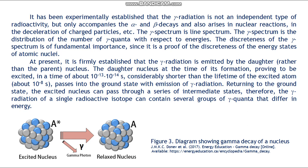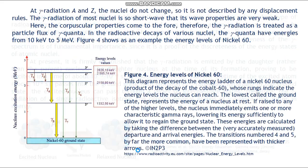The nucleus passes into the ground state with emission of gamma radiation. In returning to the ground state, the excited nucleus can pass through a series of intermediate states; therefore the gamma radiation of a single radioactive isotope can contain several groups of gamma quanta that differ in energy. At gamma radiation, the A and Z numbers of the nuclei do not change, so it is not described by any displacement rules.